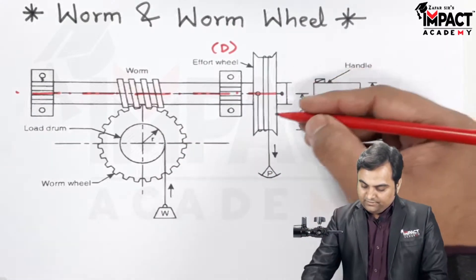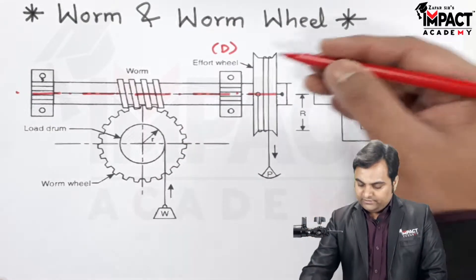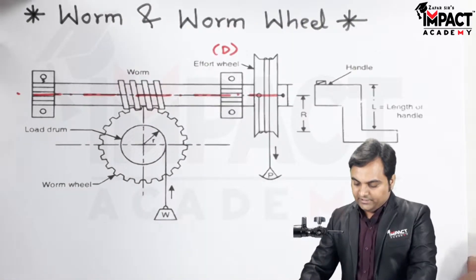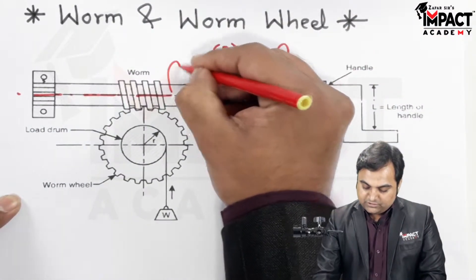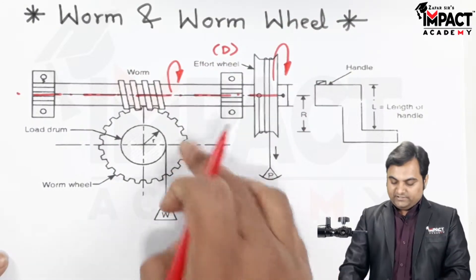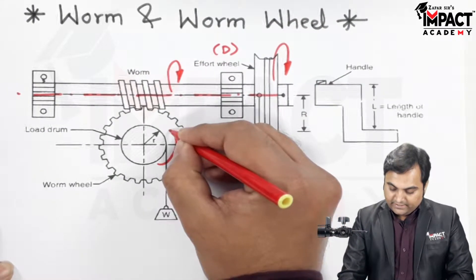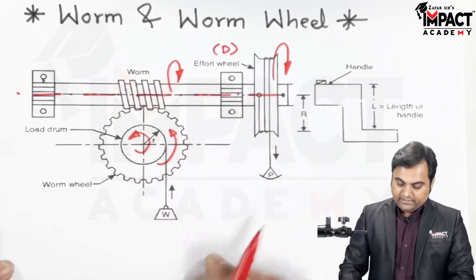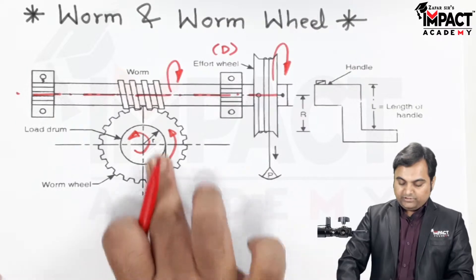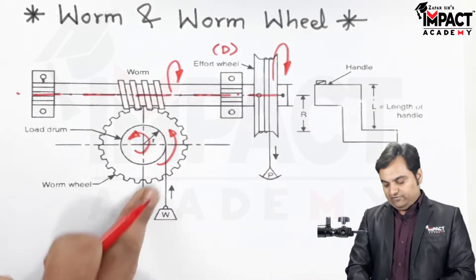we can say that when we are pulling it downward, the effort wheel rotates in a clockwise direction. When it rotates clockwise, then the worm wheel would be rotating in an anticlockwise manner, and similarly the load drum would also rotate in an anticlockwise manner and the load gets lifted. Similarly, if we want to